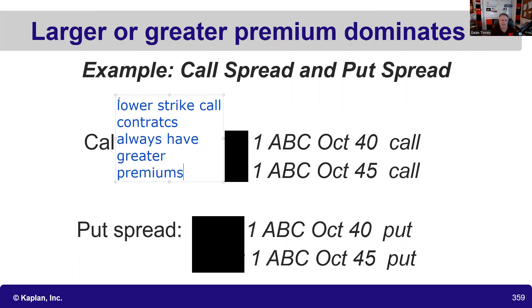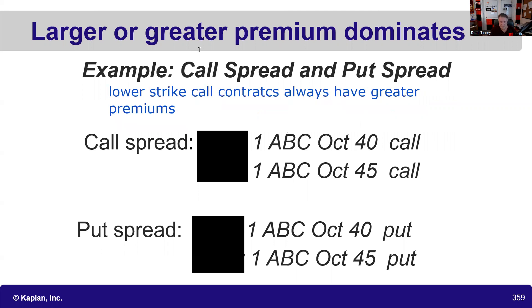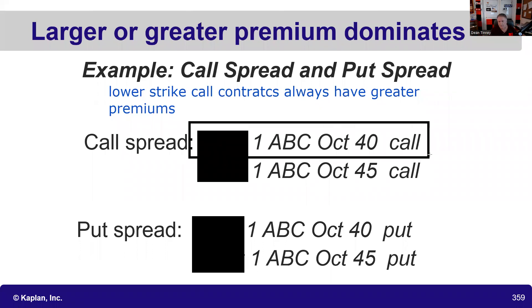What's helpful about that is now I know, even before I do the reveal to see whether I'm long or short, that the dominant leg is going to be this 40 call. So if I'm buying that 40 call, it's going to be a debit spread, because I'm going to have more money out for the 40 than I brought in for the 50. And if I'm selling that 40 call, it's going to be a credit spread — more money in than out. In a call spread, the lower strike is always dominant, and you can do a lot once you figure that out.